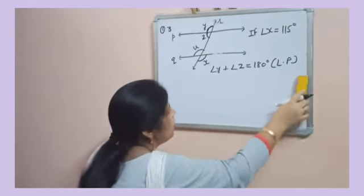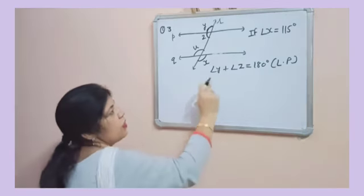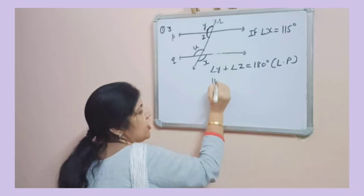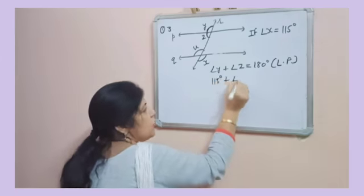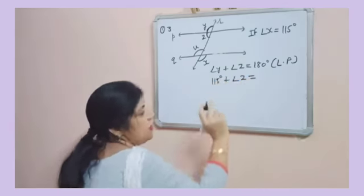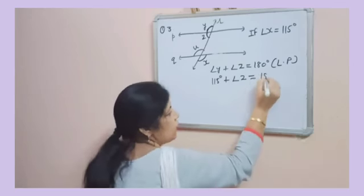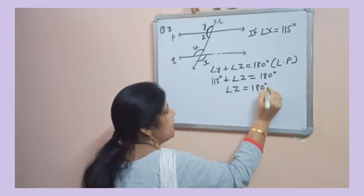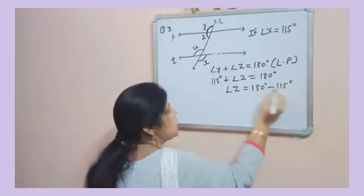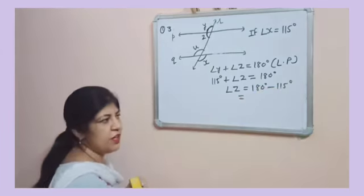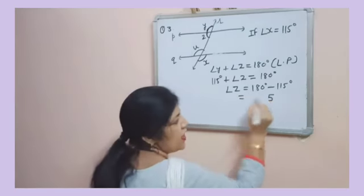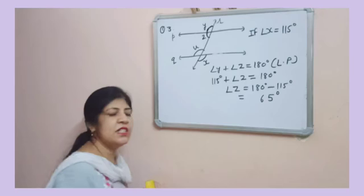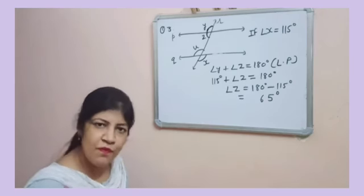Now put the value of Y. Because you know angle Y is 115 degrees, so 115 plus angle Z equals 180 degrees. So angle Z will be 180 minus 115 degrees. So 10 minus 5 is 5, 7 minus 1 is 6. So angle Z will be 65 degrees.